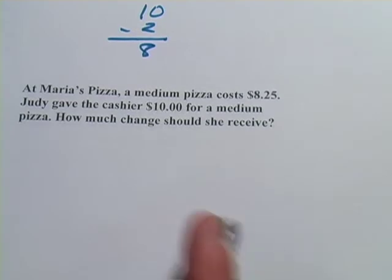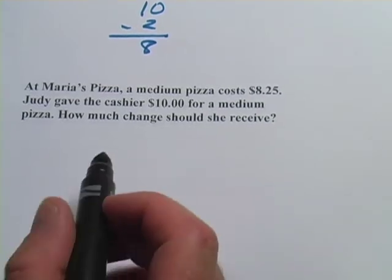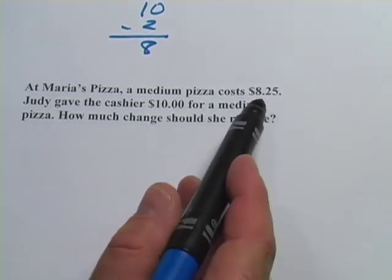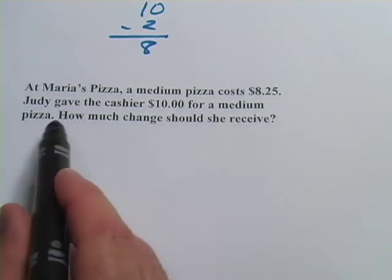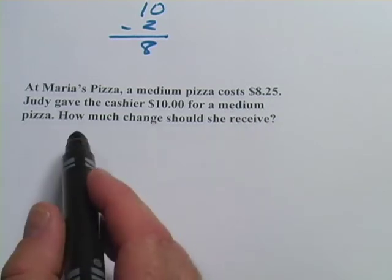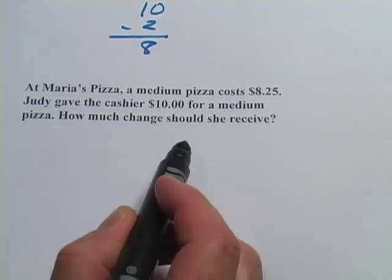One more. This one says, at Maria's Pizza, a medium pizza costs $8.25. Judy gave the cashier $10 for a medium pizza. How much change should she receive?